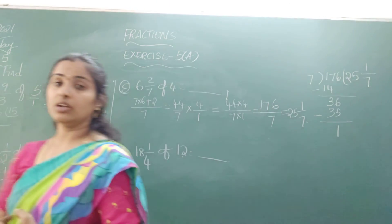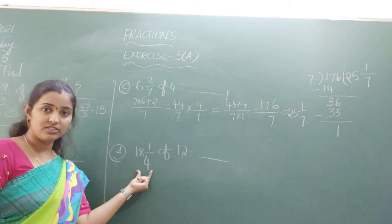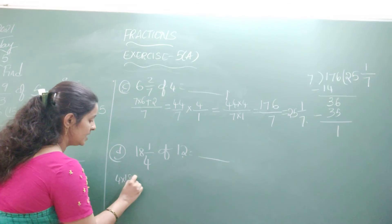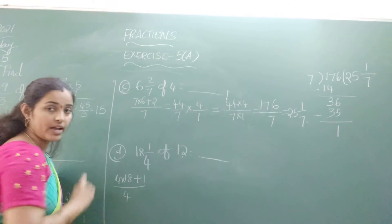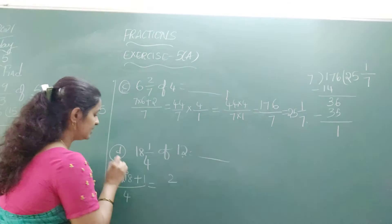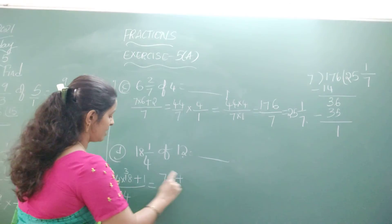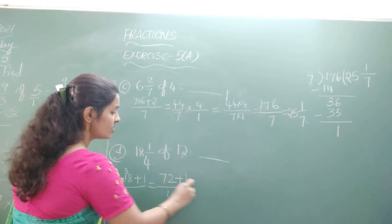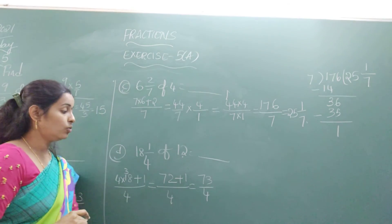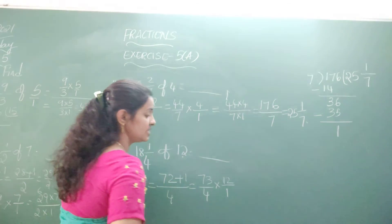Now look at the next equation. What is given here? 18 and 1 by 4 of 12. First let us write the mixed fraction as an improper fraction. That is: 4 into 18 plus 1, upon 4. 4 times 18: 4 ones are 4, 4 threes are 12... 72 plus 1 is how much? 73 by 4. So 73 by 4 multiplied with 12 by 1.